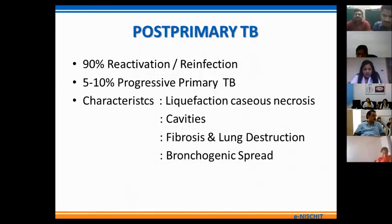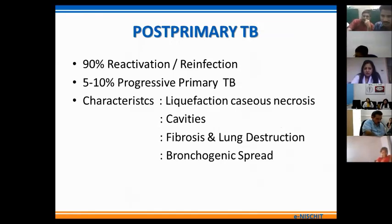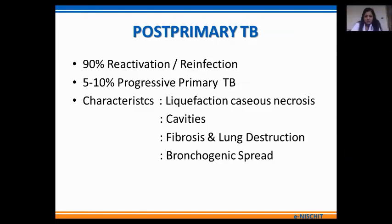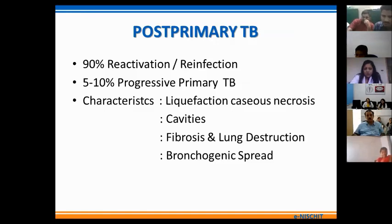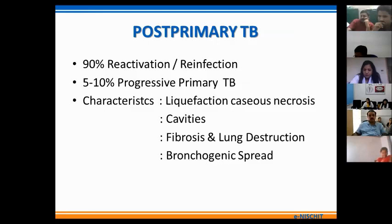Coming to the post-primary form of TB, this occurs mainly due to reactivation in approximately 90% of cases, or in a minority due to reinfection. Approximately 5–10% of primary TB patients go on to develop progressive primary TB because of hematogenous dissemination. In the post-primary form, the main findings on chest X-ray are pulmonary or parenchymal in nature — characterized by liquefaction of caseous necrosis, formation of cavities, progressive fibrosis causing lung destruction, and bronchogenic spread of disease.